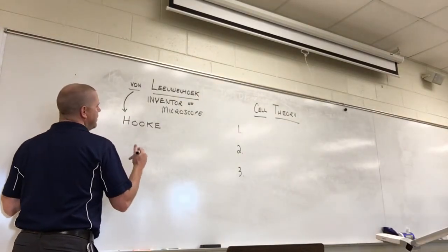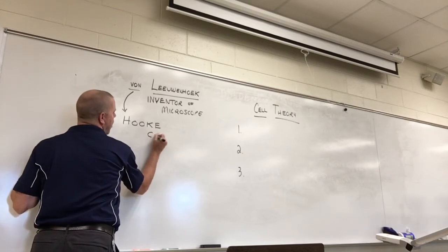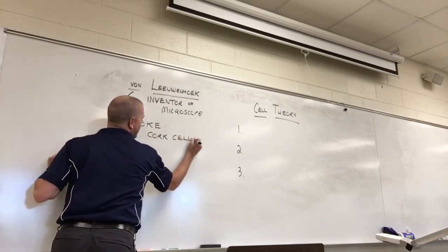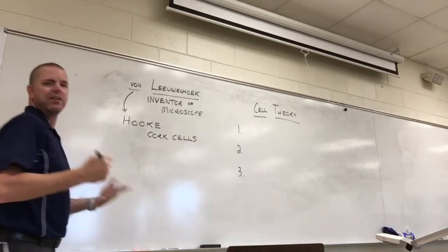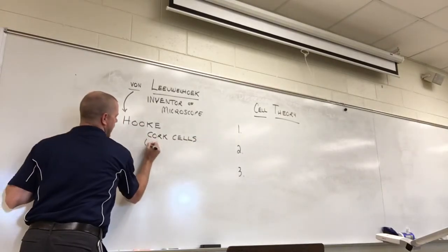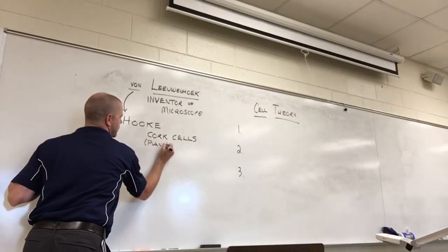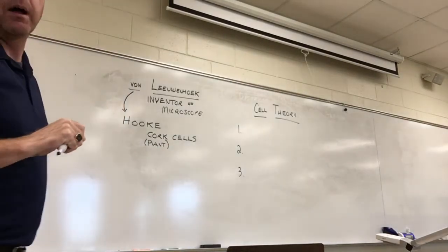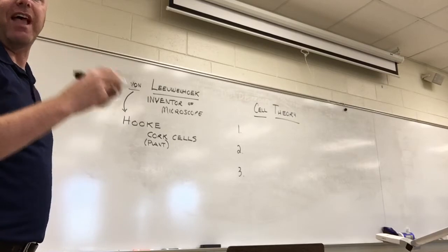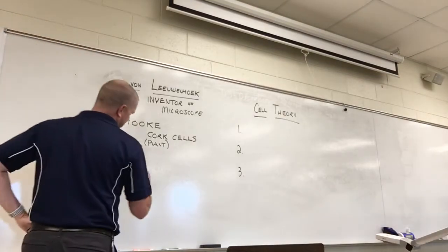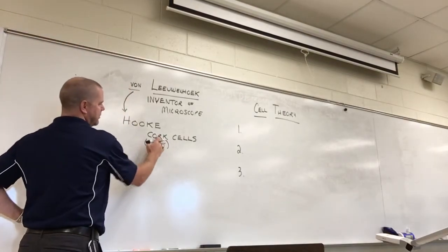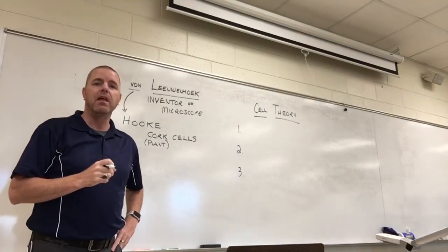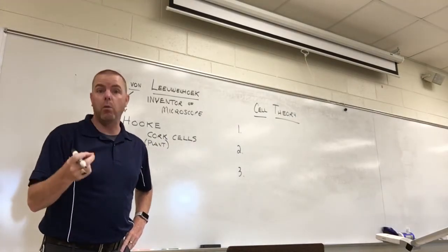Robert Hooke looked at some cork cells. Cork is plant tissue. We'll later talk about why plants and cork have a different kind of cell than animal cells. The big thing to know about cork cells and plant cells is they have something that makes them very particular - they have a cell wall.